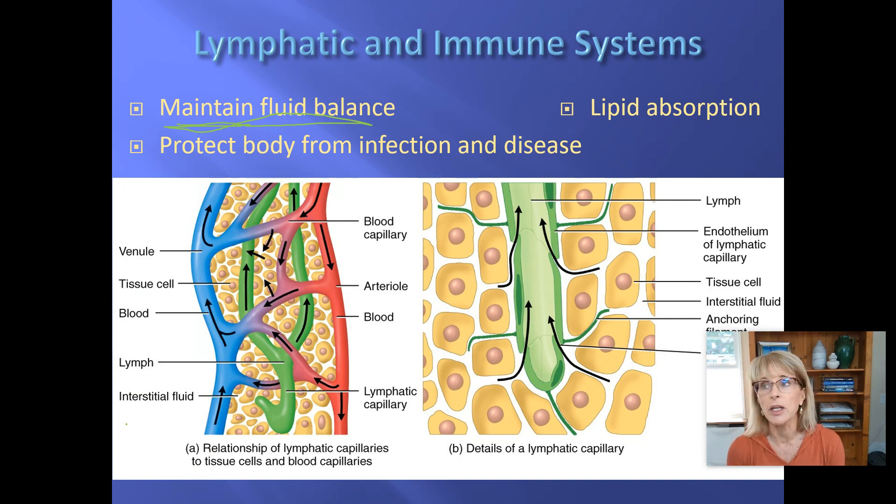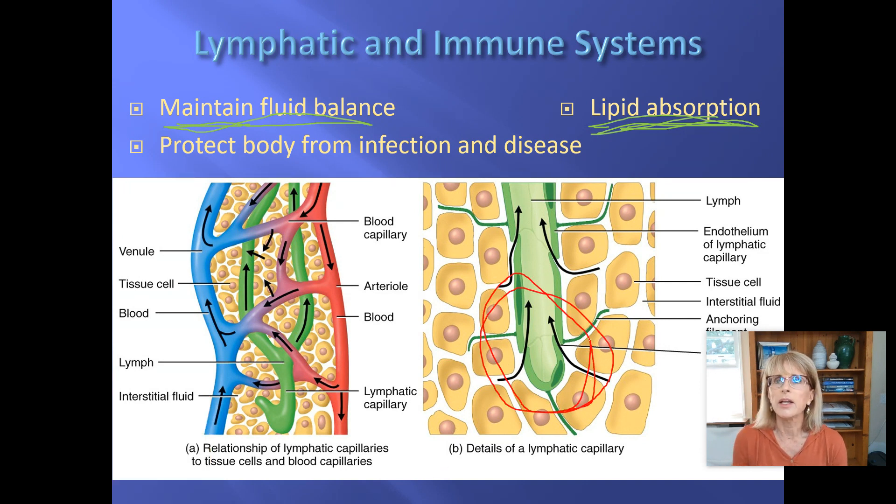When we get to the digestive system, you will learn that lipid absorption is another function of the lymphatic system. There are little dead-end tubes—there are little dead-end tubes that look like this in all of your intestinal tract—and those little dead-end tubes are gathering up all of the fat that you have digested from your meal, and they are also taking that back towards the heart.